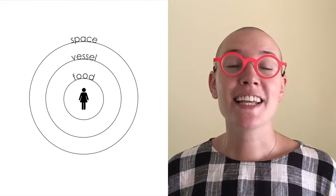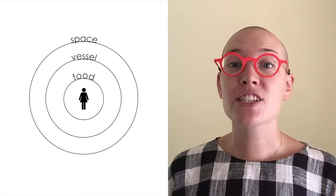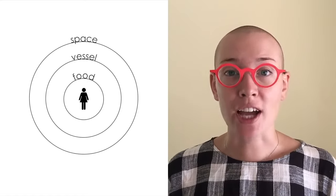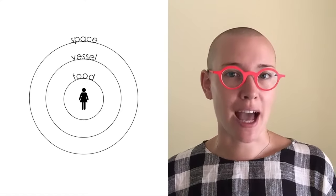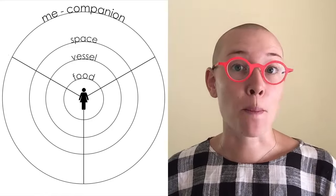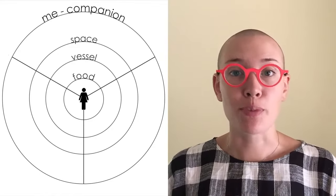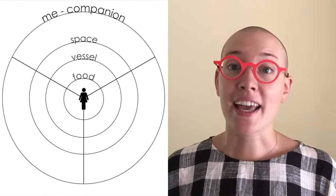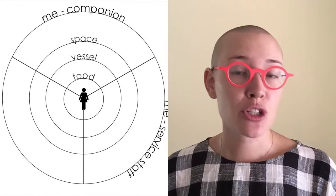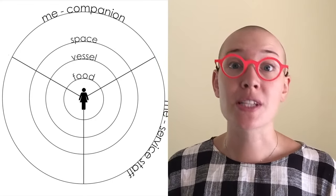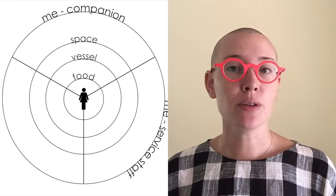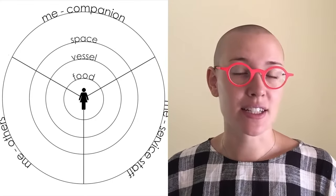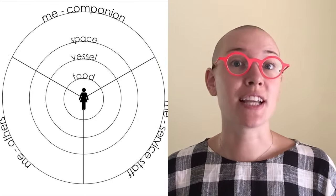Finally, in the eating situation there is always a human interaction of some type. I can interact with my companion — the person with whom I'm eating. I can interact with the service staff — those who serve or sell me the food. And I can interact with the others — the people eating around me.